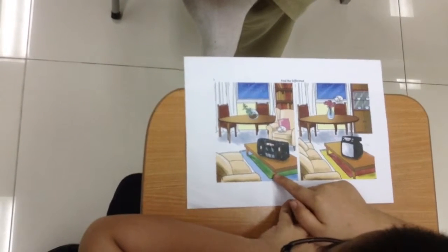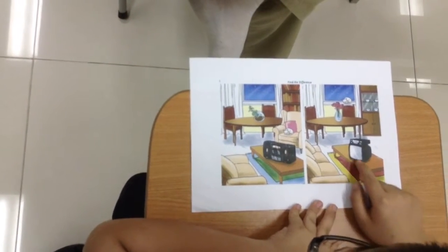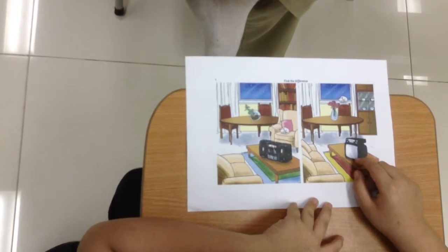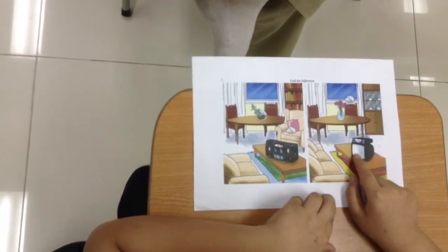In the picture one, there is a radio on the table. In the picture two, there is a TV. Okay. Yes, it's different. Yes, of course.